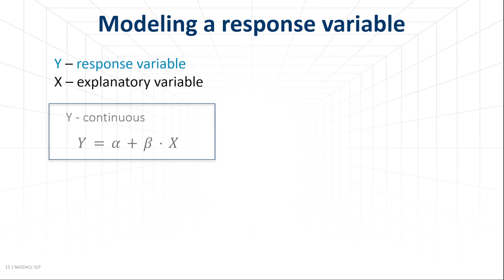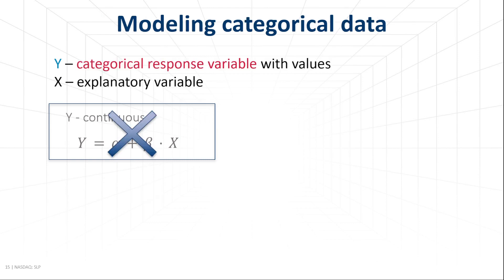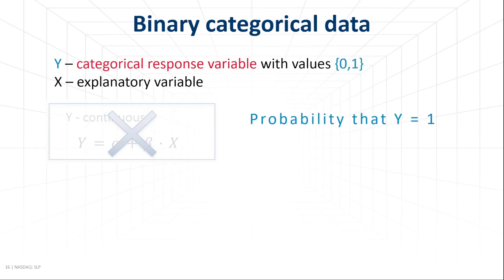If y were a continuous variable, the simplest relationship between y and x is linear: alpha plus beta times x. The parameter alpha is the intercept, and beta describes the strength of the effect of x on y — sometimes called a slope. But if y is a categorical variable, this model is not appropriate. It gives a continuum of values for each x instead of 0 or 1 for binary data.